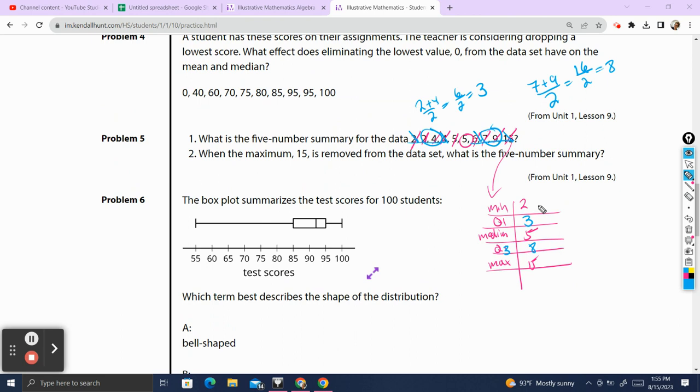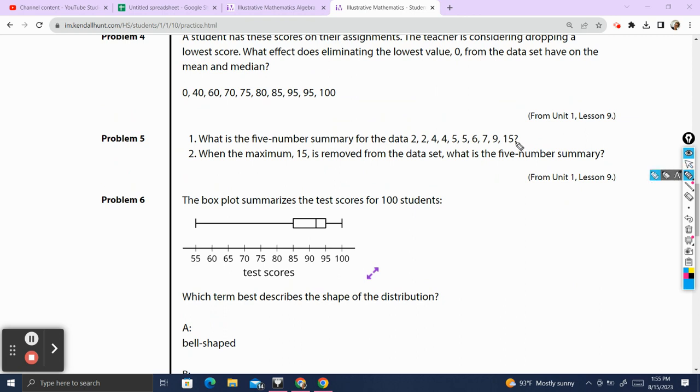When the maximum of the data is 15, what happens to the five number summary? So take a second and pause this video here if you want to look over on how to do the five number summary again. If not, I'm going to erase it, and we're going to calculate it again without the 15. So we remove the 15 from the data. Let's go ahead, draw another table, and calculate our five number summary again.